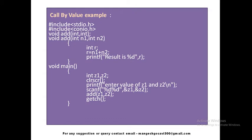Let us check an example of call by value. In this program I am trying to add two numbers using a function with the call by value concept. First, control will be on main — I define two variables z1 and z2, then take their values from the user using printf and scanf. When control comes to the line 'add(z1, z2)', that is called function calling, and control will transfer to the add function. The value of z1 gets stored in n1 and the value of z2 gets stored in n2.